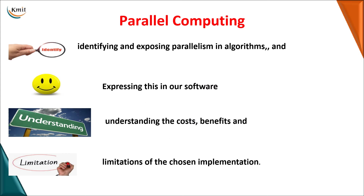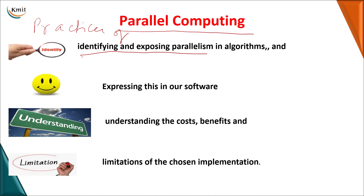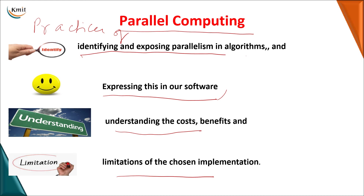Having seen the basic difference between serial, parallel, and concurrent computing, what is parallel computing? Parallel computing is a practice of identifying and exposing parallelism — first you identify where parallelism has to exist in your algorithm, then you express this in software, and then you understand the cost, benefits, and limitations of your chosen implementation. Put together, parallel computing is the practice of identifying and exposing parallelism in algorithms, expressing this in software, and understanding the cost, benefits, and limitations of the chosen implementation.